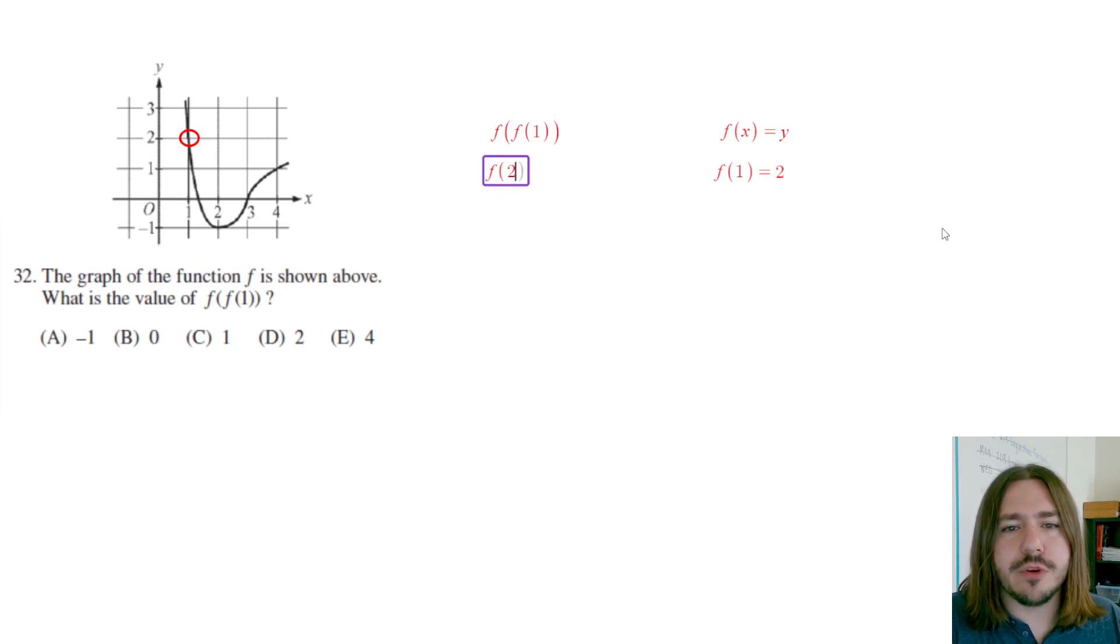So now I'm going to evaluate f of 2 using that same method. 2 is going to be an x value, and what I'm interested in is the y value. So I'm going to look at my curve, find where x is 2, which is right here, and then report back the y-coordinate on the graph. So we can see that's going to be negative 1.